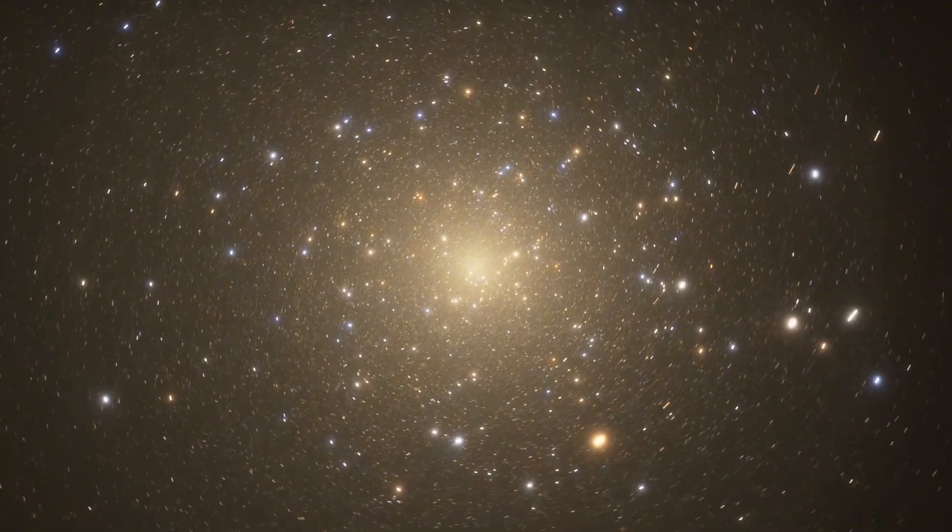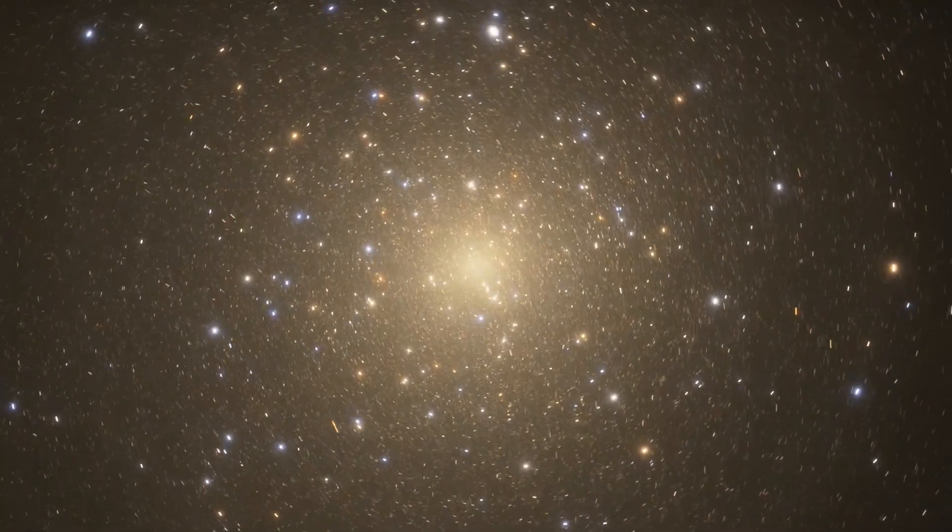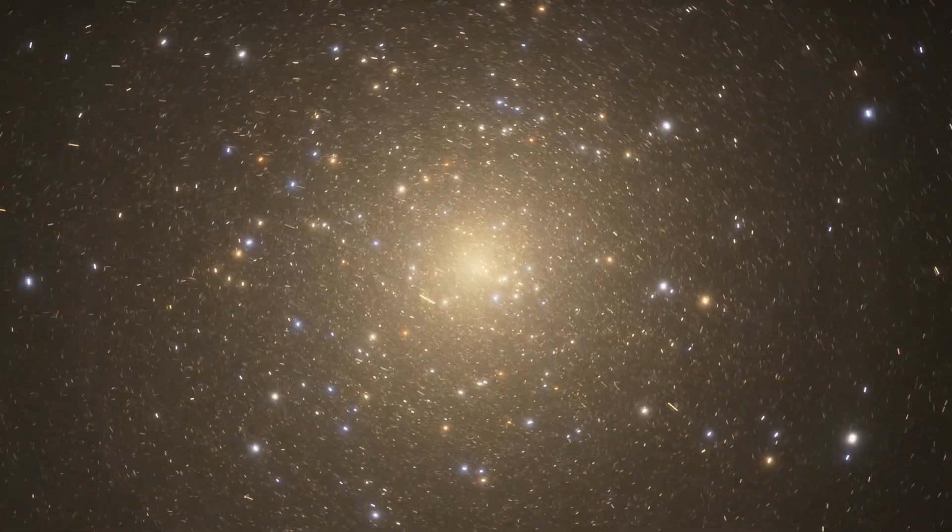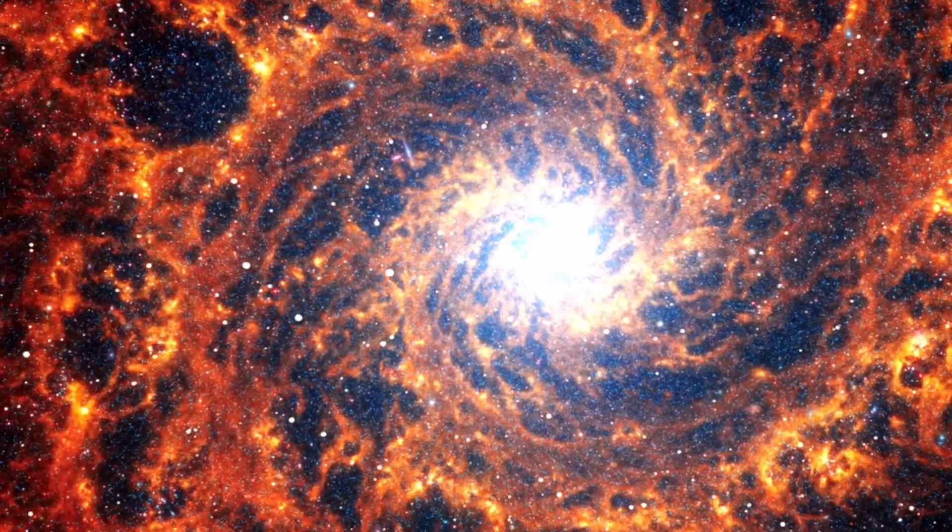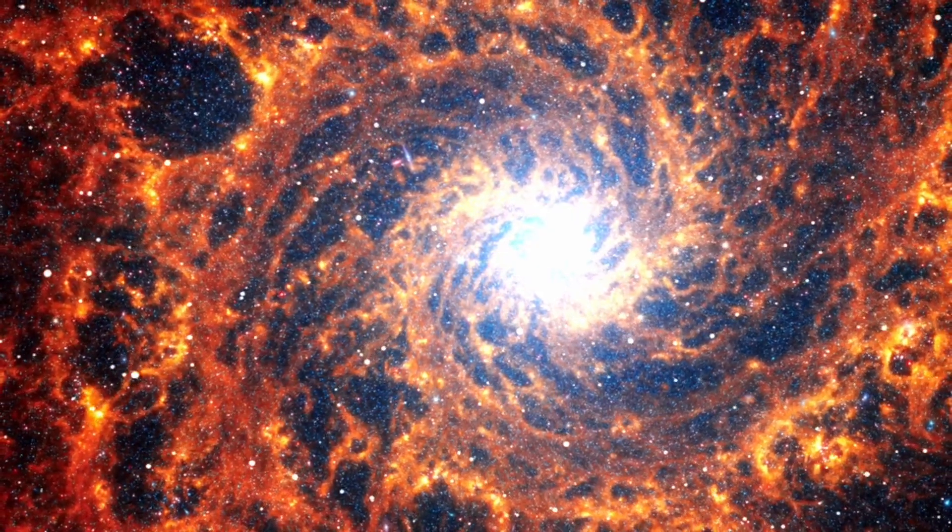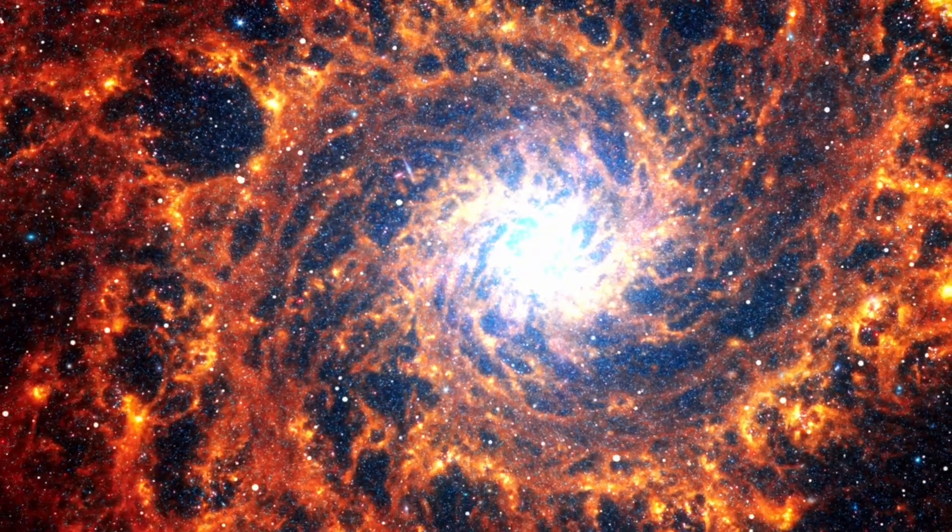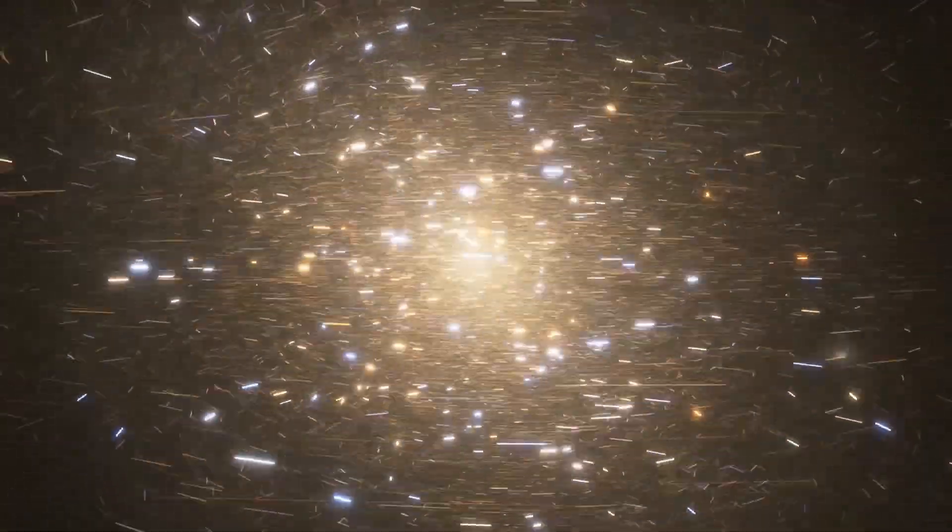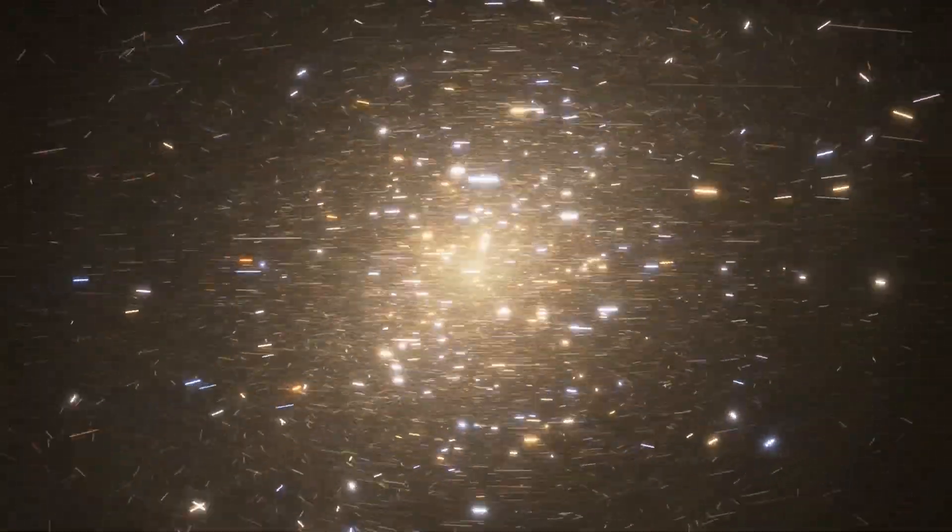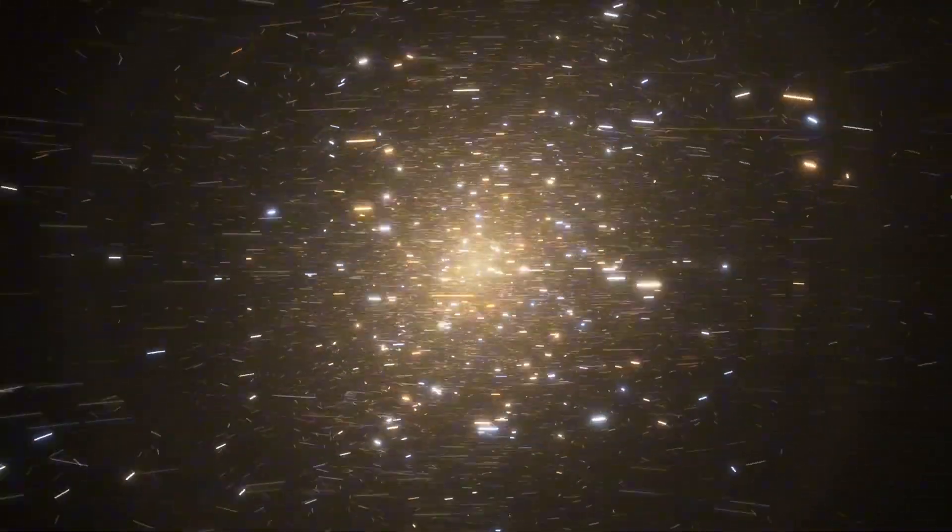Globular clusters likely form during the first few billion years after the Big Bang, and their chemical signatures have long been used to trace the early chemical evolution of galaxies. The fact that MOMZ 14 mirrors this pattern suggests that similar star formation processes may have been at work in this young galaxy just 280 million years after the Big Bang, challenging our understanding of when and how such environments could have developed. If globular cluster-like conditions were already present in MOMZ 14, it implies that some of the universe's earliest galaxies were chemically and structurally more evolved than previously assumed.